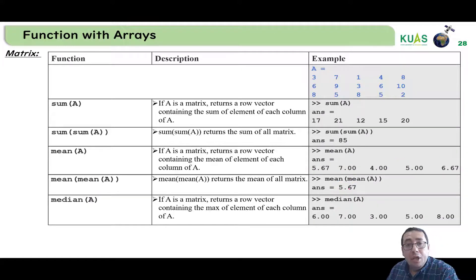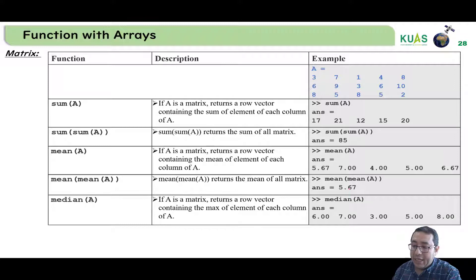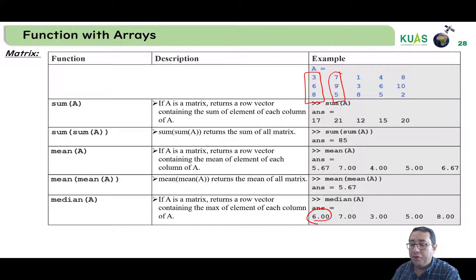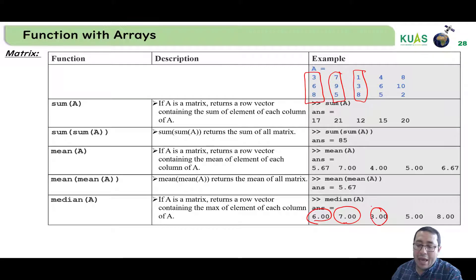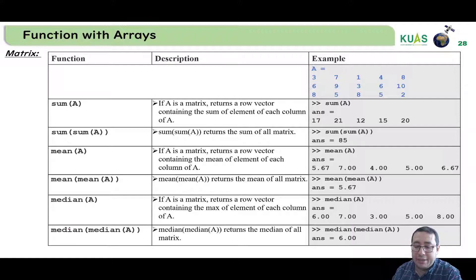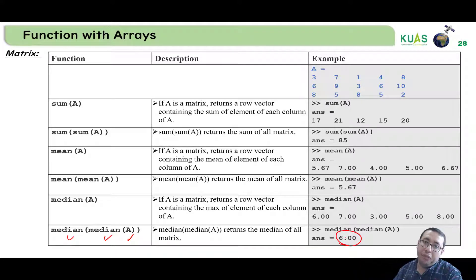How about the median? As mentioned, it finds the middle number. For example, for the column 3, 6, 8 it should be 6; for 5, 7, 9 it will be 7; and for another column it will be 3. So we estimate the median for each column. If we need the median for the whole matrix as one number, we write median(median(A)), which sorts all elements and finds the overall median.